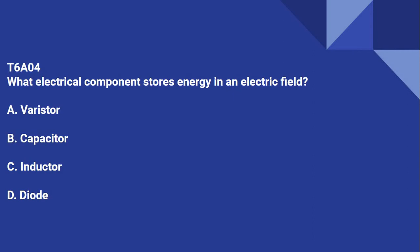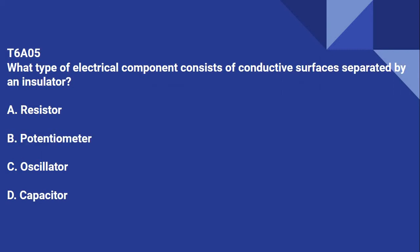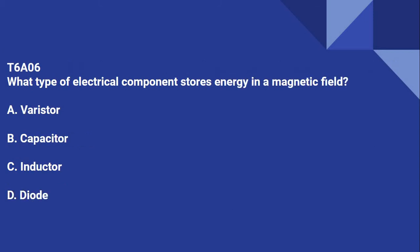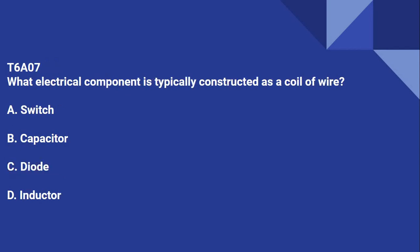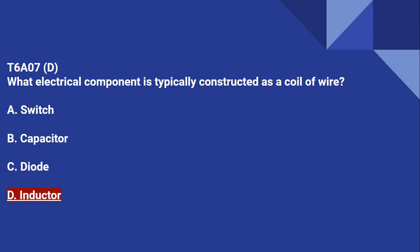T6A04: What electrical component stores energy in an electric field? That is a capacitor. T6A05: What type of electrical component consists of conductive surfaces separated by an insulator? That is a capacitor. T6A06: What type of electrical component stores energy in a magnetic field? That is an inductor. T6A07: What electrical component is typically constructed as a coil of wire? That's an inductor as well.